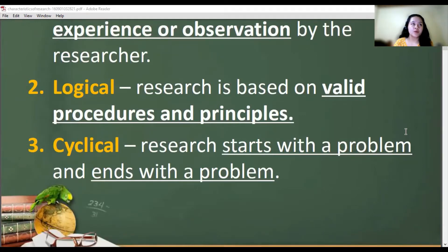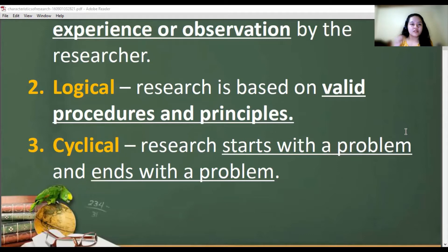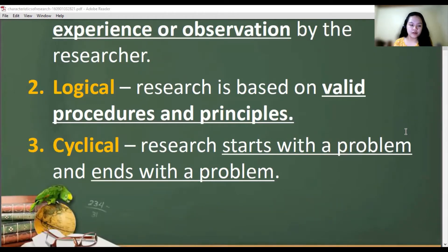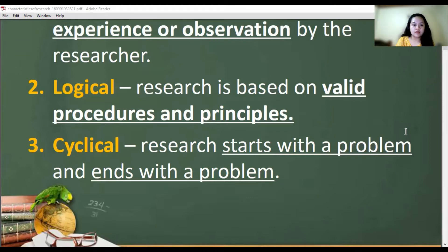In cyclical research, the first step is knowing a research problem. You can't come up with a research output without having a research problem or topic. Once you have a topic and finish your research paper, another problem emerges — one problem solved leads to another problem. That's why research is called cyclical.